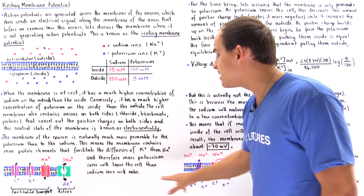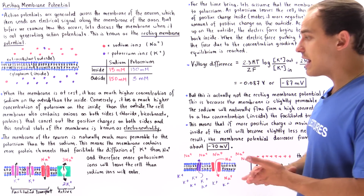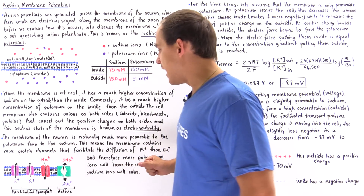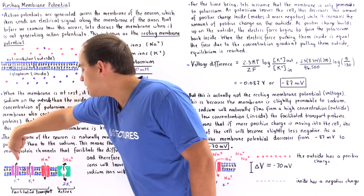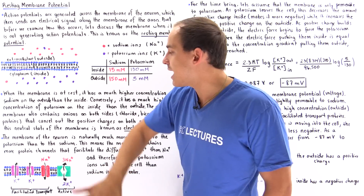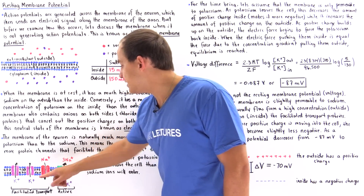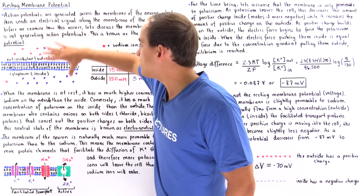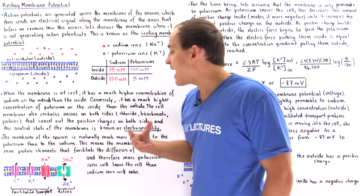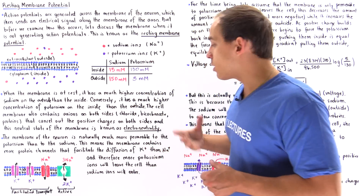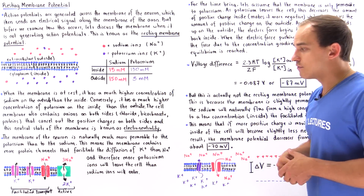More potassium ions will leave the cell compared to the sodium ions that enter. The membrane contains facilitated transport proteins — ones that transport potassium from inside to outside, down its concentration gradient, and ones that transport sodium from outside to inside. There are also proteins that actively transport potassium and sodium, which we'll discuss in more detail in the next several lectures. This active transporter is known as the ATPase protein.